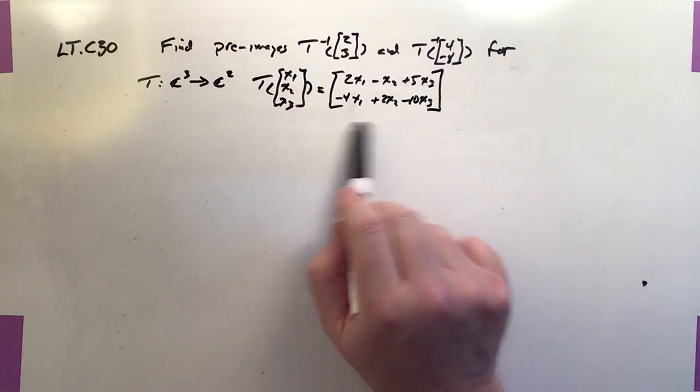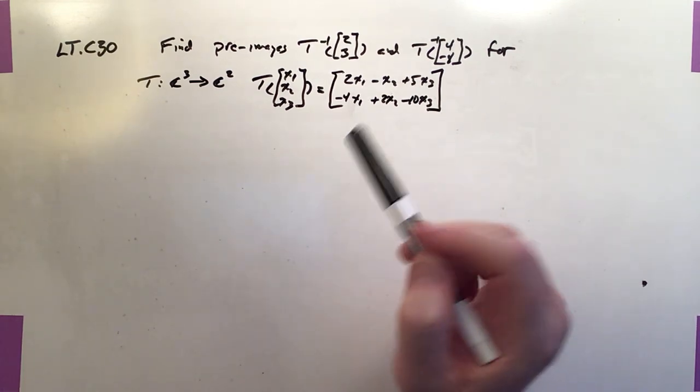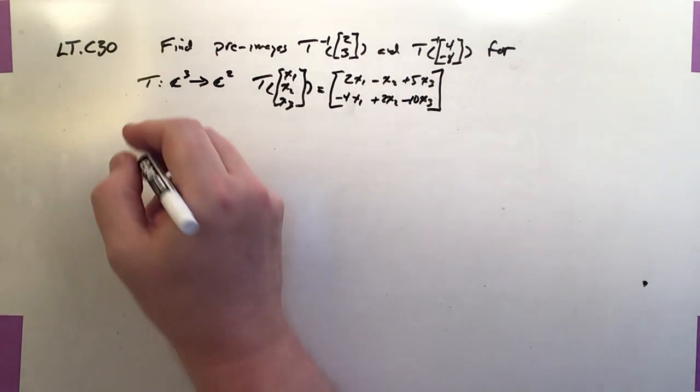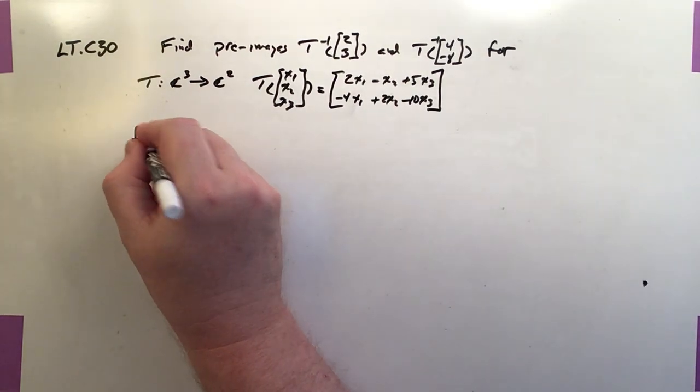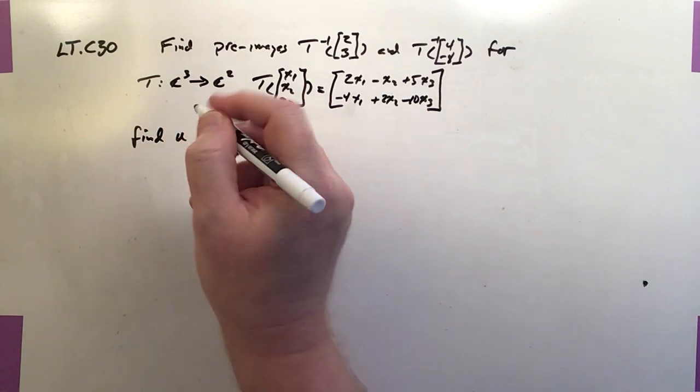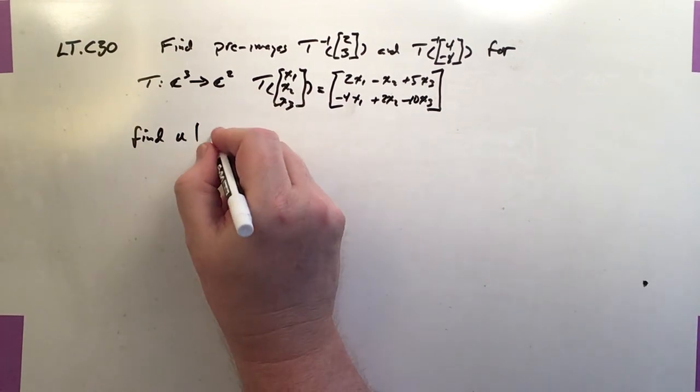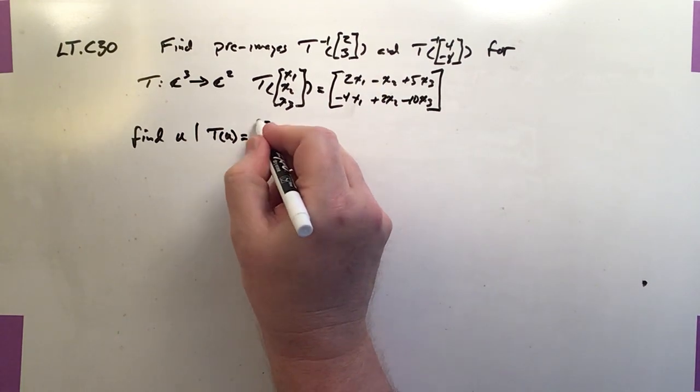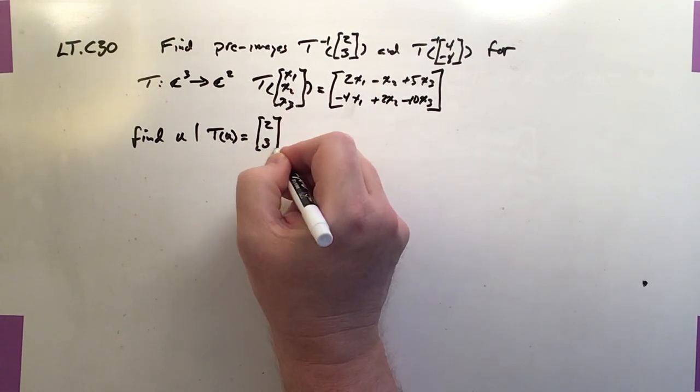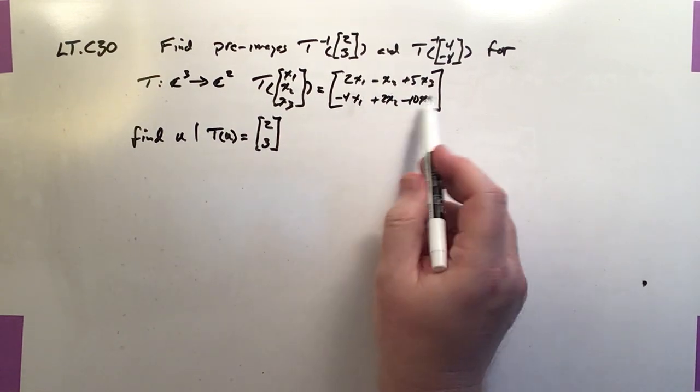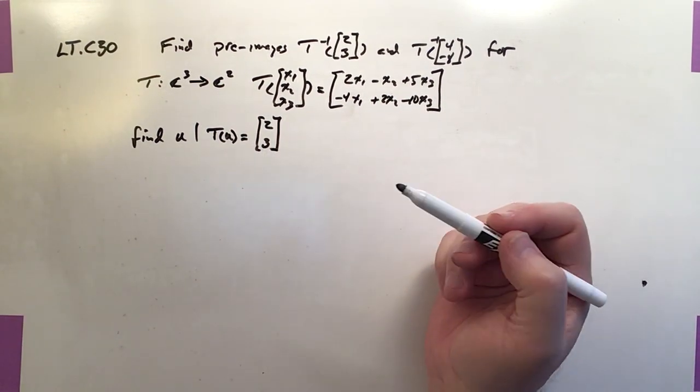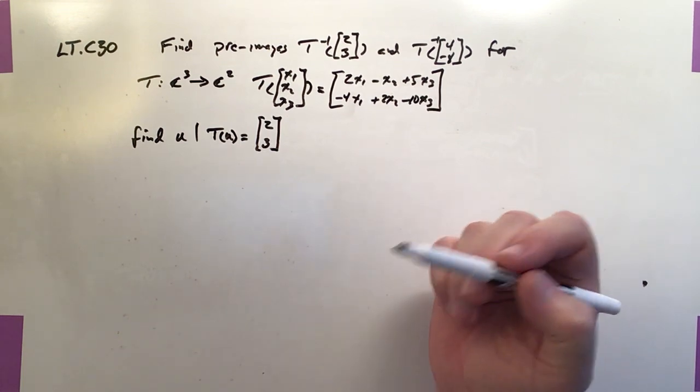And of course, when it's matrix-based like this, it's pretty easy. We're just looking for the solution to the linear system. So that's all we're going to do. If I want to find u such that T(u) is equal to [2, 3], then I basically need to know what values of x1, x2, and x3 make this system produce [2, 3]. And it could be 1, it could be many, it could be none.